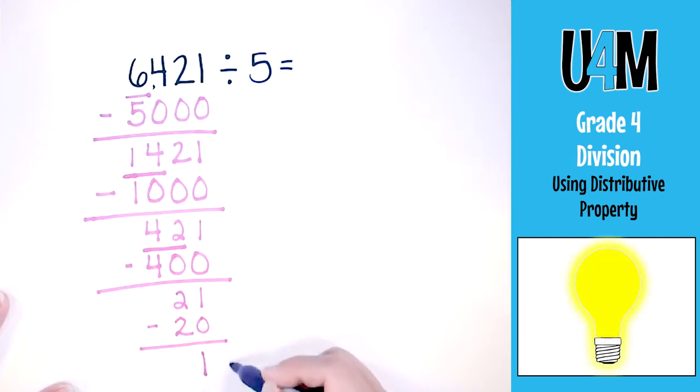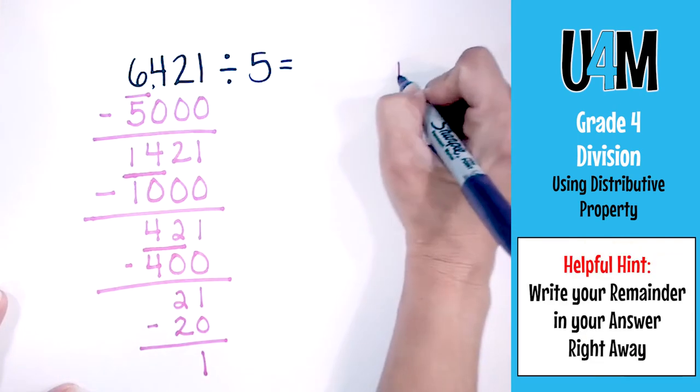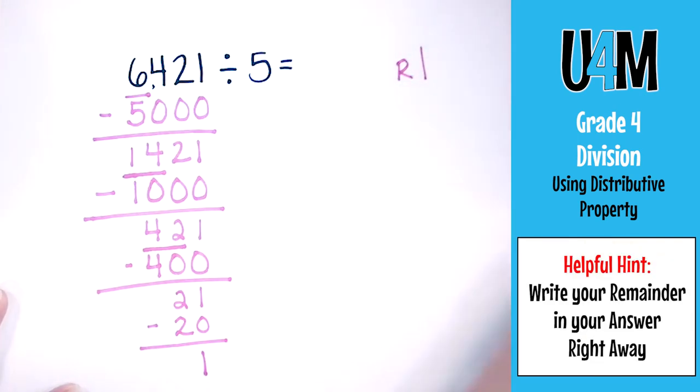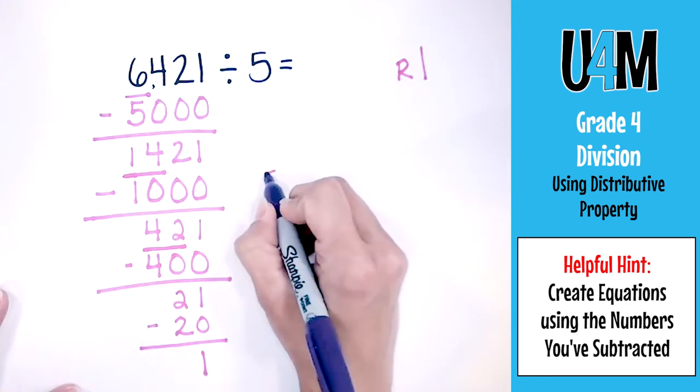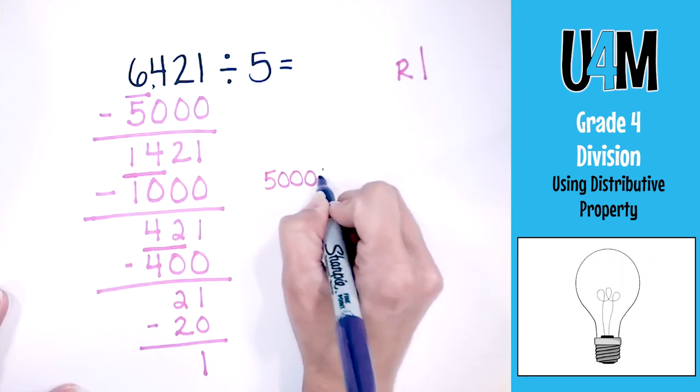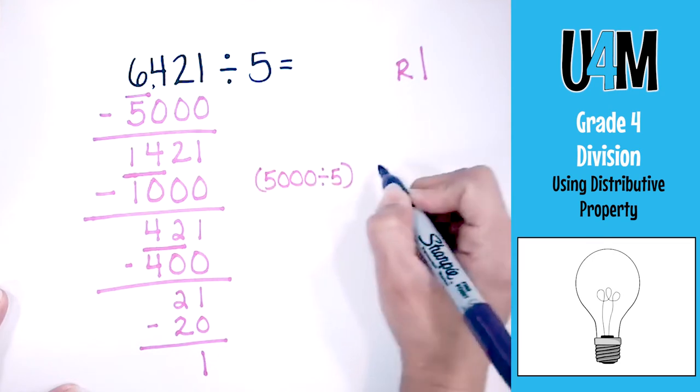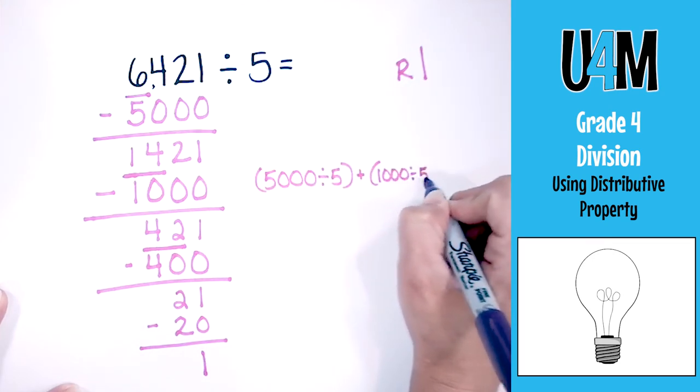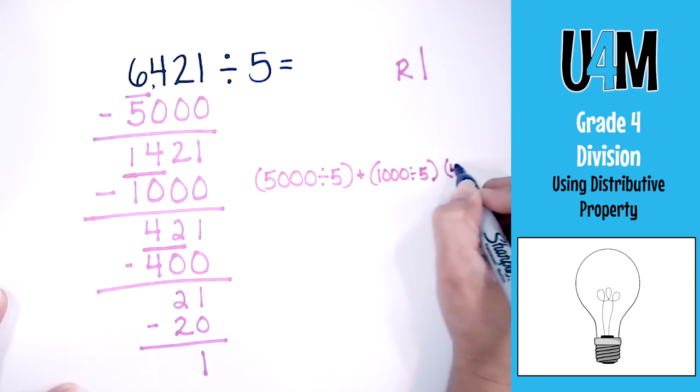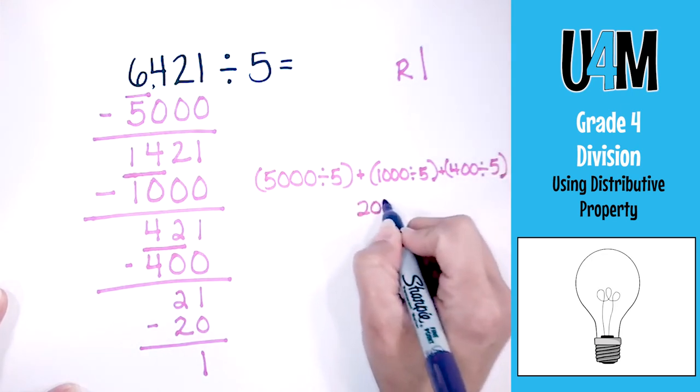This is instantly our remainder, so now we're going to put that up top here so I don't forget that there's a remainder of 1. Now we create those equations: 5000 divided by 5, I'm going to add that to 1000 divided by 5, 400 divided by 5, and then 20 divided by 5.